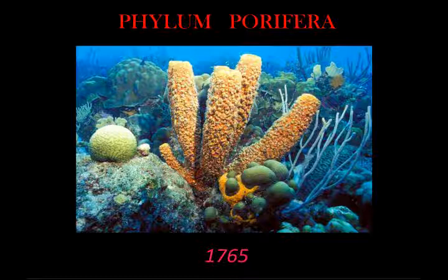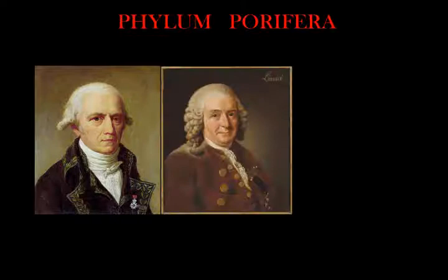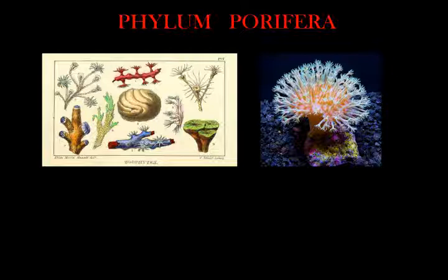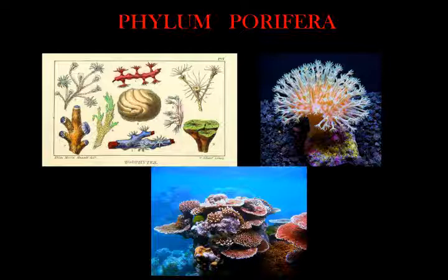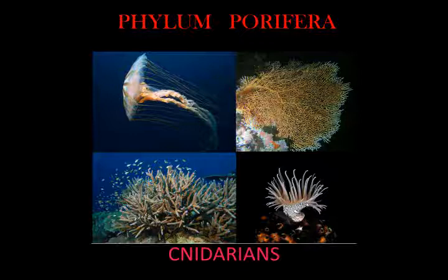The great naturalists of the late 18th century and early 19th century — Lamarck, Linnaeus, and Cuvier — classified them among zoophytes or polyps, considering them closer to Cnidarians. Through the 19th century, sponges were grouped with Cnidarians under the name Celenterata or Radiata.